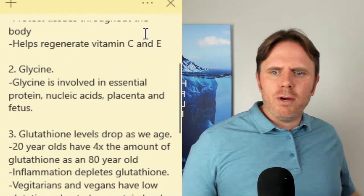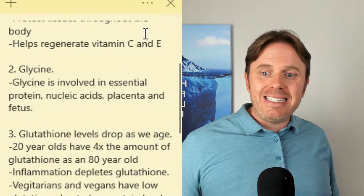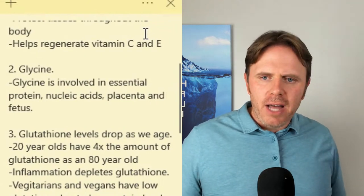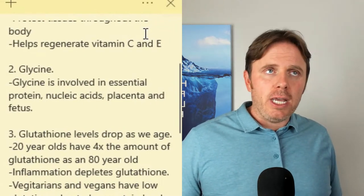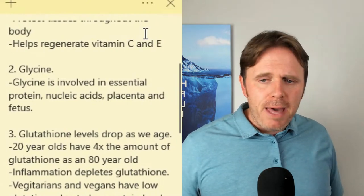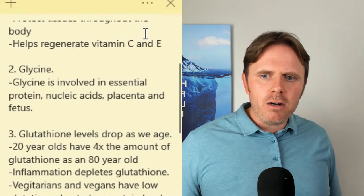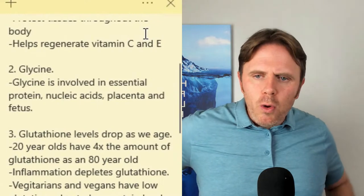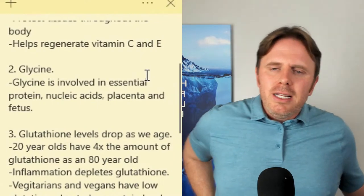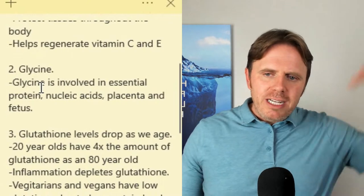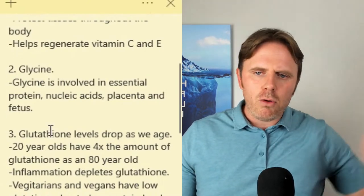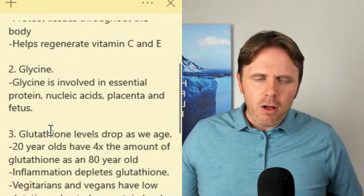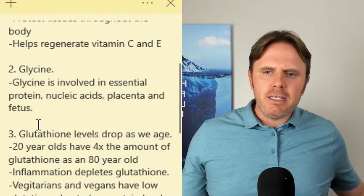Glutathione drops as we age. 20-year-olds have four times the amount of glutathione as an 80-year-old. If we can bump up our glutathione and match a 20-year-old, that's going to have enormous benefits, because part of aging is oxidative stress — that chronic loss of electrons. Inflammation plays a major role in oxidative stress. Simple things make a big difference.